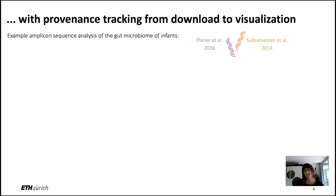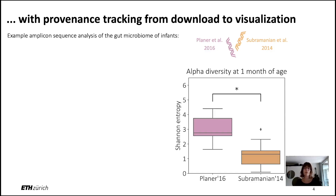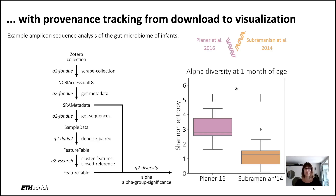To showcase the full provenance tracking and the full reproducibility of Q2 Fondue, in the poster we display an example use case. The use case we chose consists of two studies that looked at an infant's gut microbiome. If one were to download the sequencing data and associated metadata of these two studies, one might end up with a final visualization showing the differences in diversities between the two studies. The main characteristic of using Q2 Fondue for such an analysis is that each step performed to get this final visualization is tracked in provenance and saved together with the final visualization.